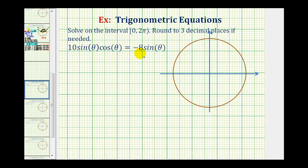So the first step is to add eight sine theta to both sides of the equation. So we'll have 10 sine theta cosine theta plus eight sine theta equals zero.